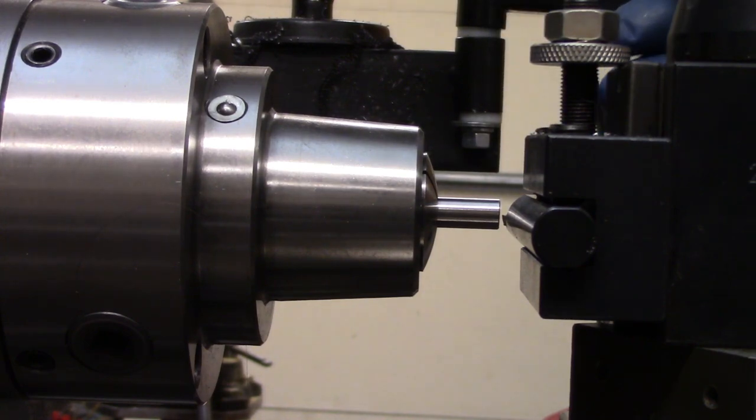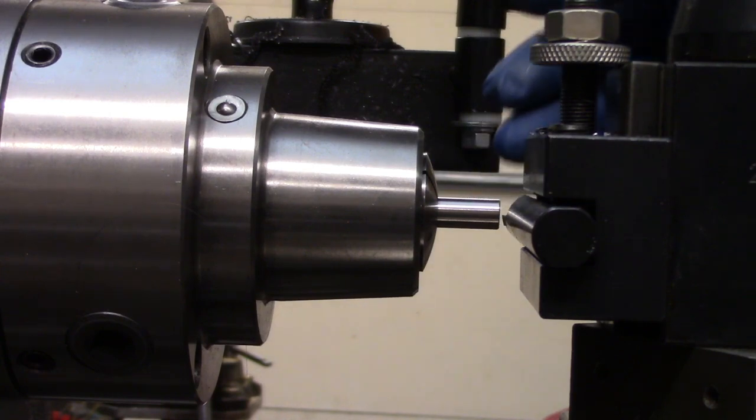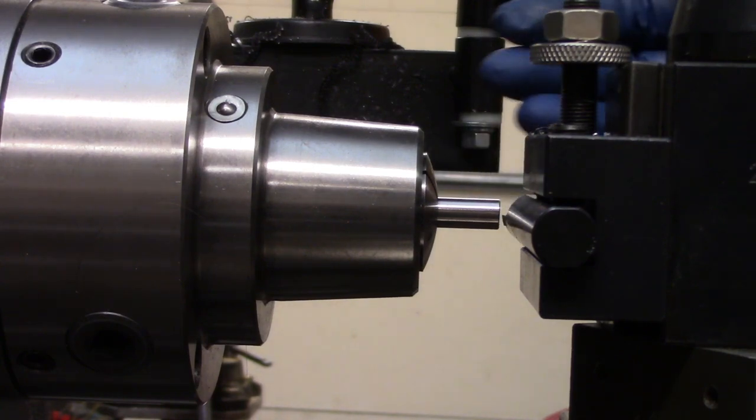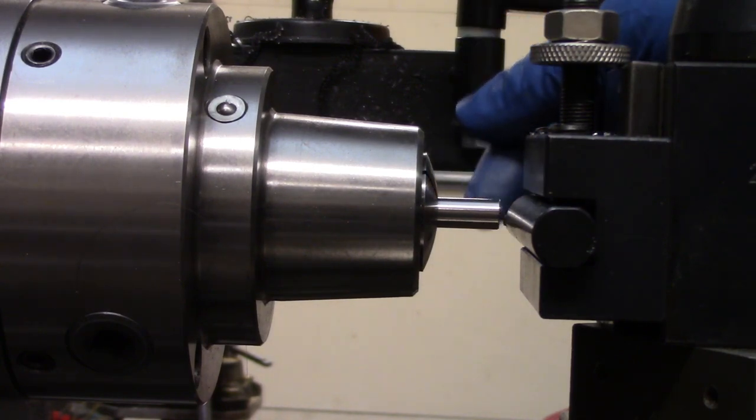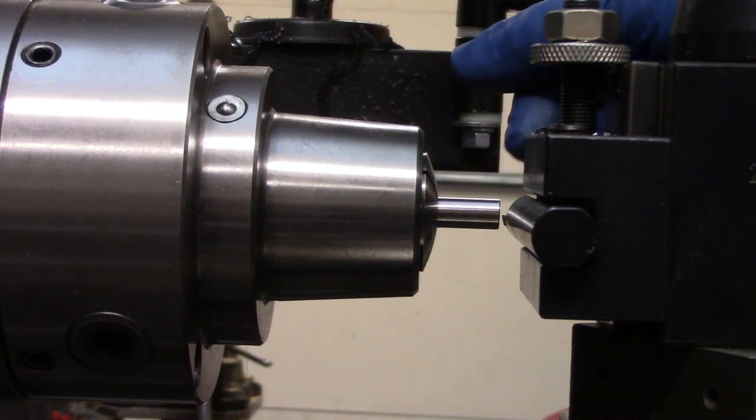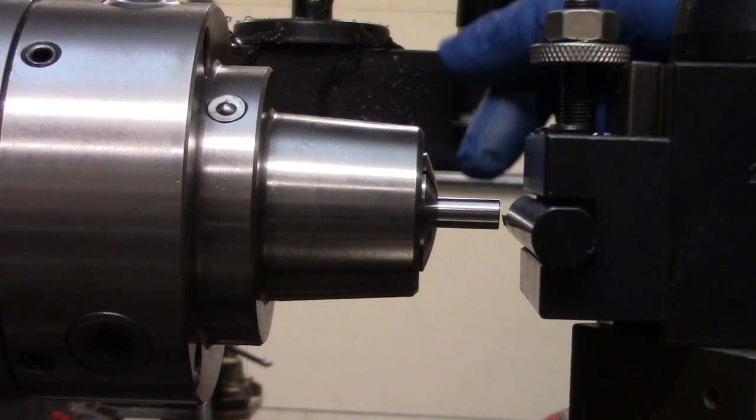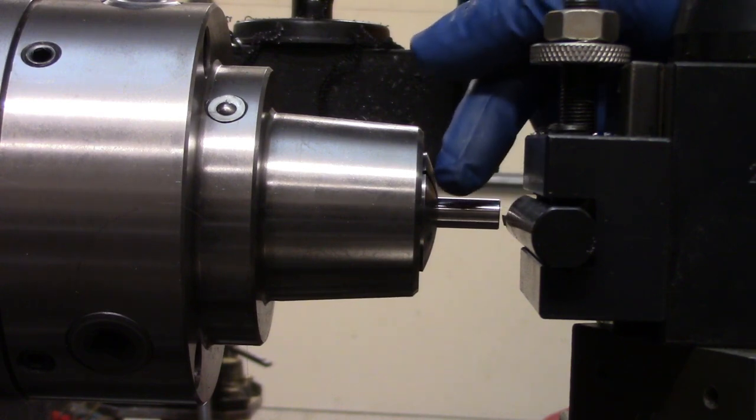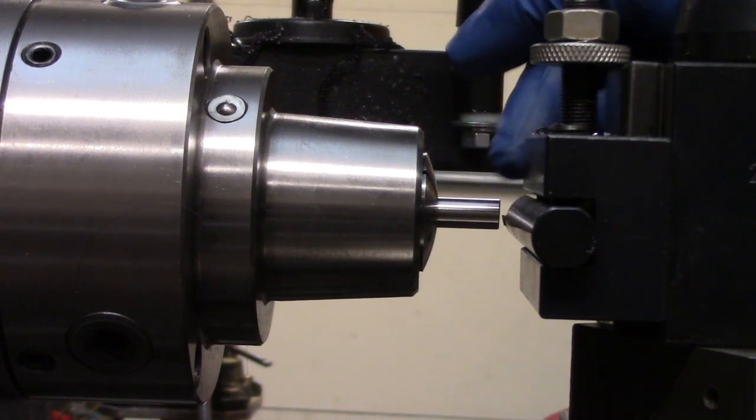If you've got a lathe and a mill you can do this, or even if you just have a lathe and you want to spend some time at the grinder it's pretty accessible. I'm going to turn a 60 degree point on this and then bring it over to the mill and mill a flat on one side halfway through.